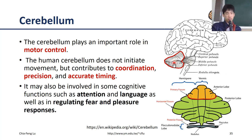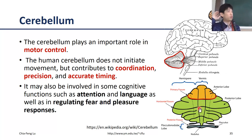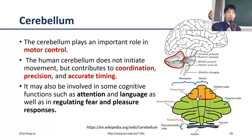Beyond motor control, the cerebellum also has important connections to cognitive functions such as attention, language, and regulation of fear and pleasure responses. These are related specifically to the anterior portion of the cerebellum. Anatomically, the cerebellum has horizontal and primary fissures; above the primary fissure is the anterior lobe, and below it is the posterior lobe, which can be further divided by the horizontal fissure into the crus I and crus II portions.